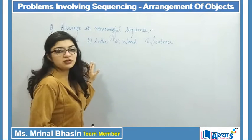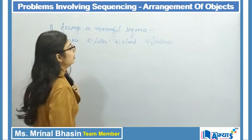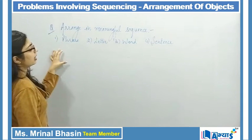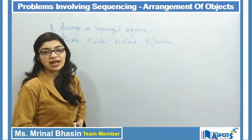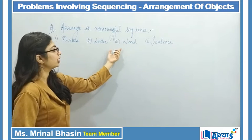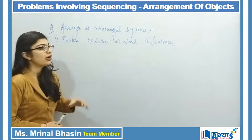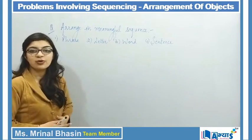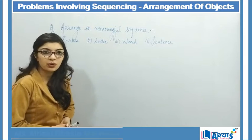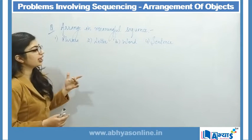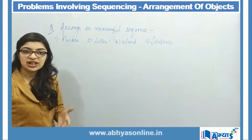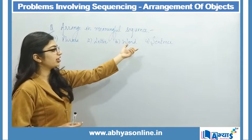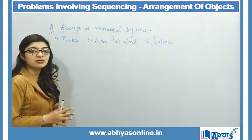This is our first question. In the first question we have 4 words given — we will see how the words correspond, and arrange the 4 objects in proper order. We will arrange them in a meaningful sequence where each word or object is interrelated.